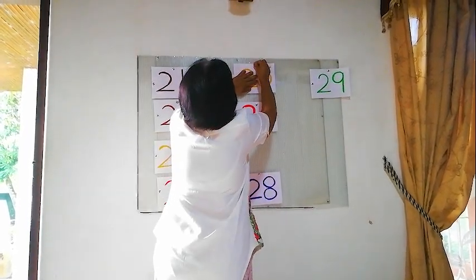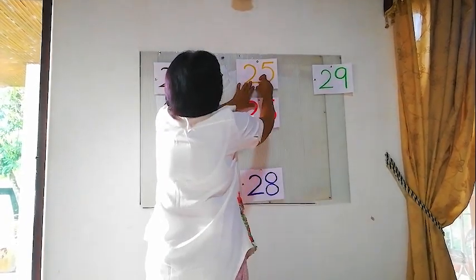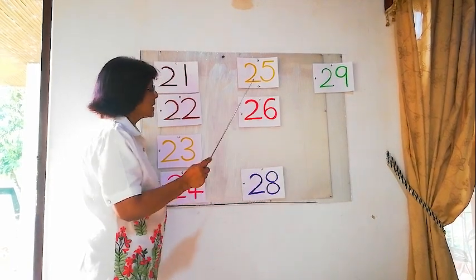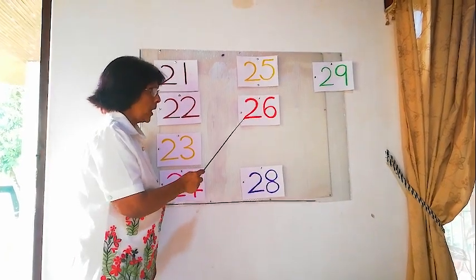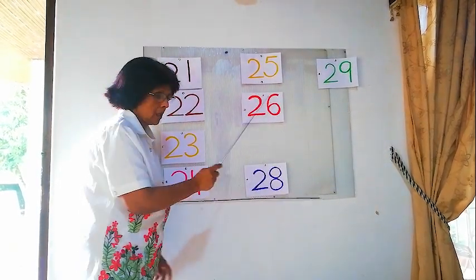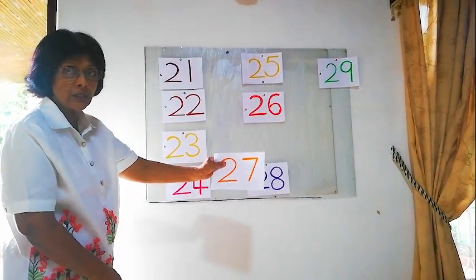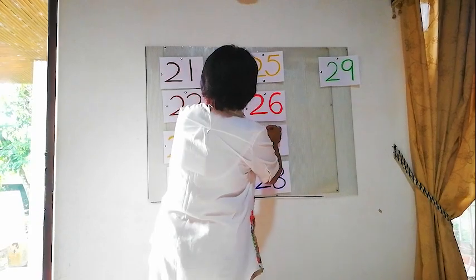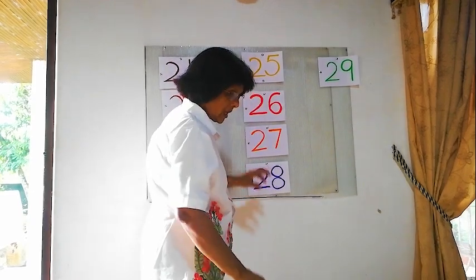25. Before 26 comes 25. Okay? Now, after 26, what is the next number? Before 28, after 26 — 27. 27. You see, 27. Is this correct? Yes, this is correct. 27 — 2, 7. After 26, the number is 27.